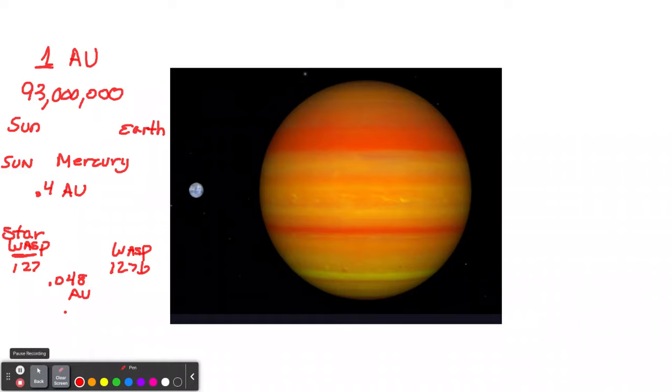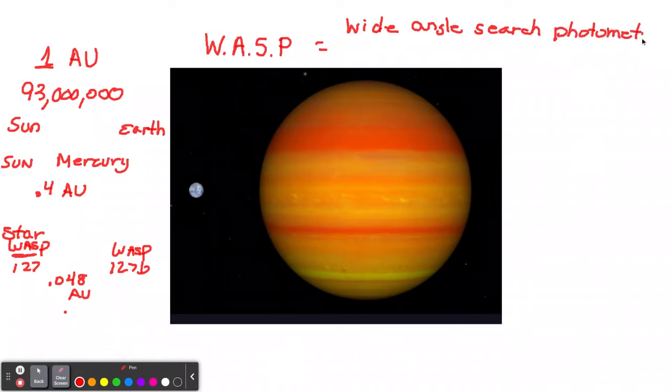WASP stands for Wide-Angle Search Photometry. There are many WASP stars out there because of this detection system. It's just a way of trying to detect exoplanets. Remember, exo means out of our solar system - they're finding a lot of exoplanets out there.